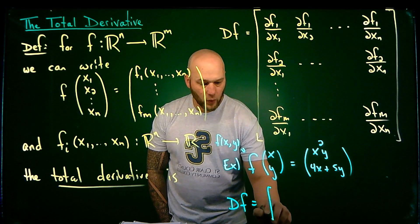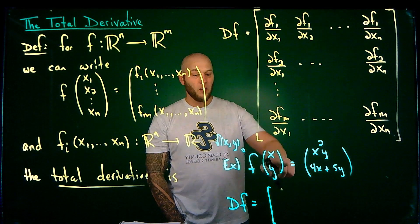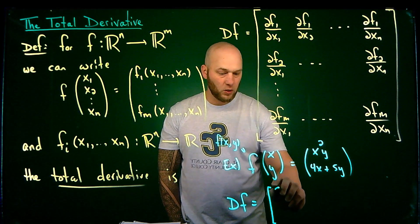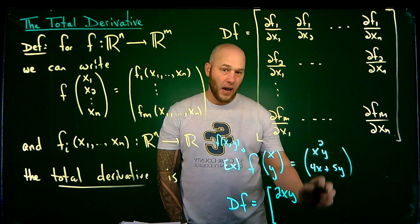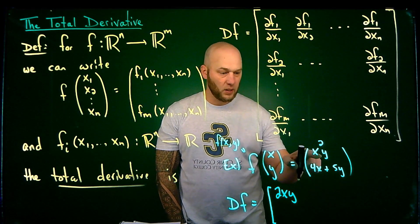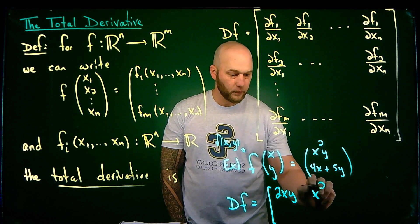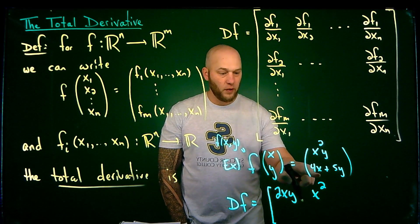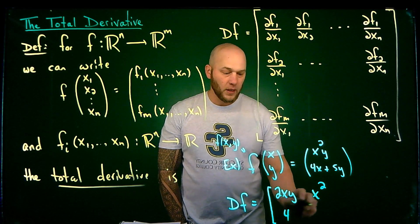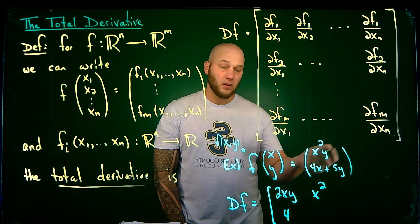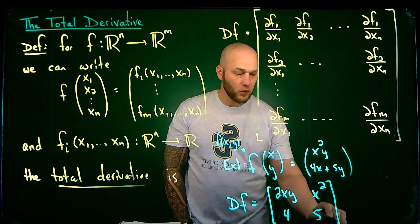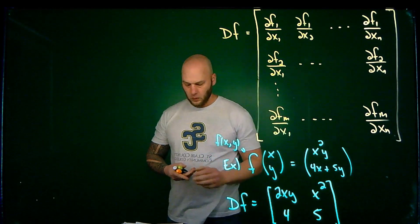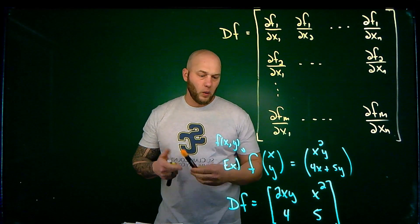Let's compute the total derivative of that function. It's going to be a matrix with two rows and two columns. The first row uses the first component function x²y: the partial with respect to x is 2xy, and the partial with respect to y is x². The second row uses 4x + 5y: the partial with respect to x is 4, and the partial with respect to y is 5. So the total derivative is the matrix [[2xy, x²], [4, 5]].